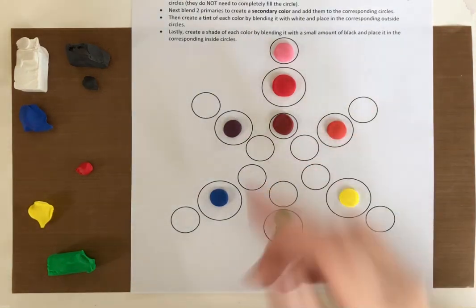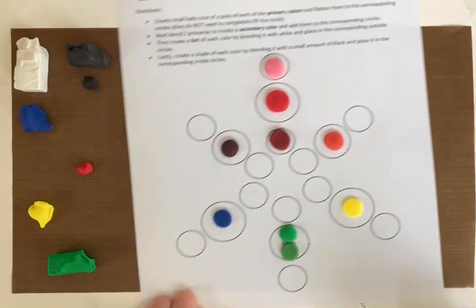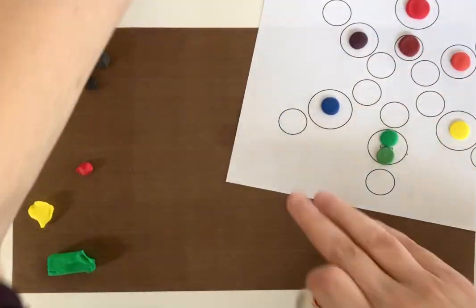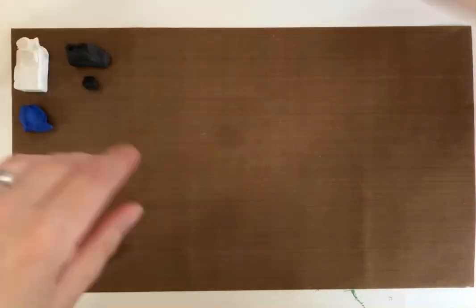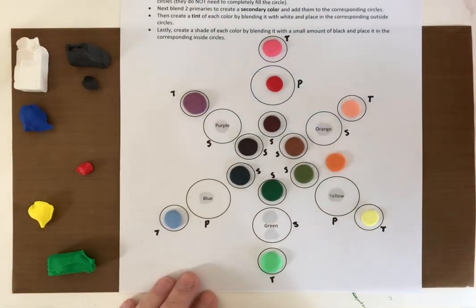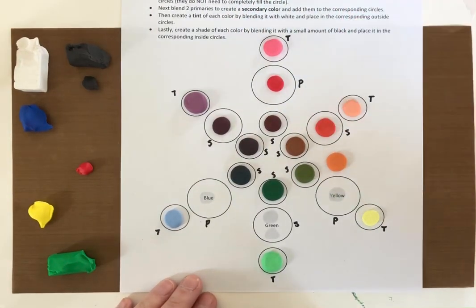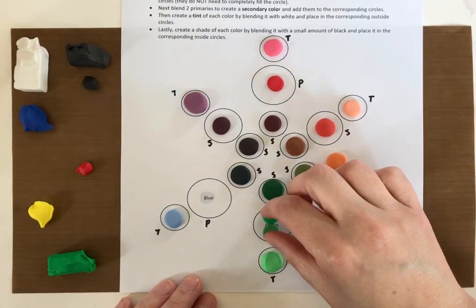So you would continue on with all of that until you have the whole thing filled, and that is gonna look like this right here. So I'm gonna add my little purple back in. I'm gonna add my orange back in. I'm gonna add back in all the ones that I stole from my first bit here.